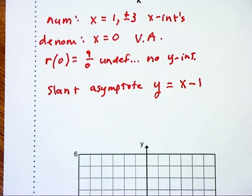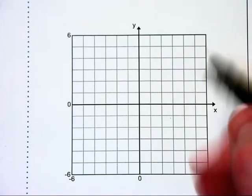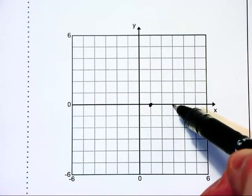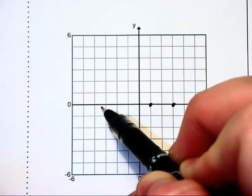And here we go. So let's plot our x-intercepts first. We will have one at positive 1, positive 3, and negative 3.